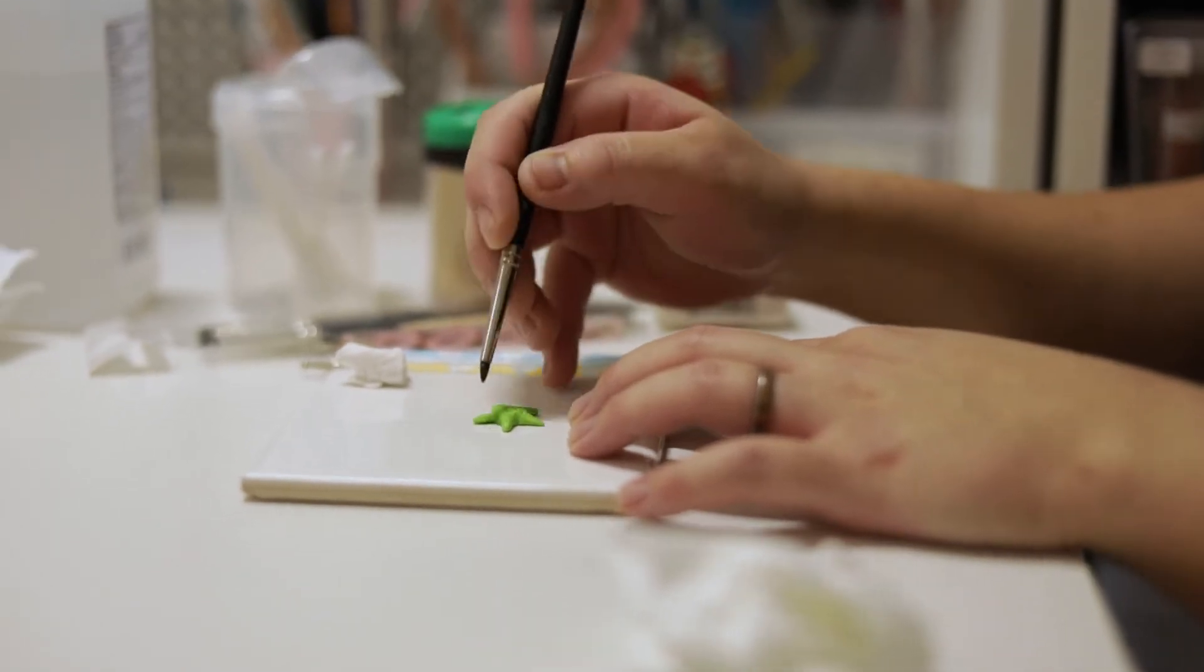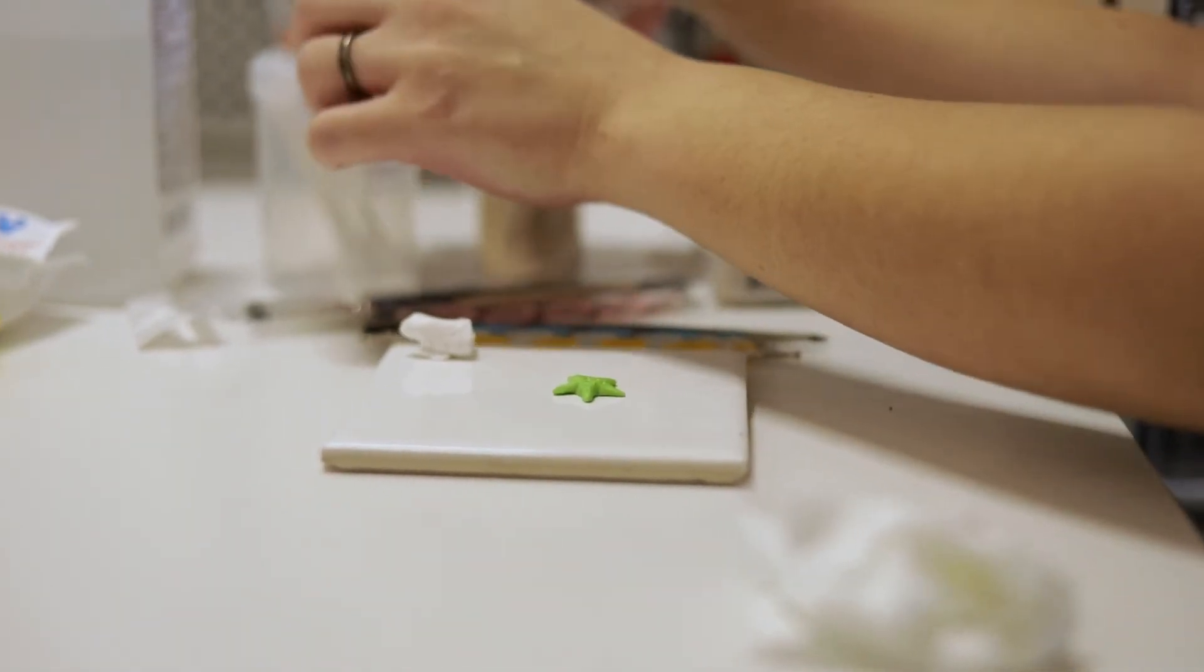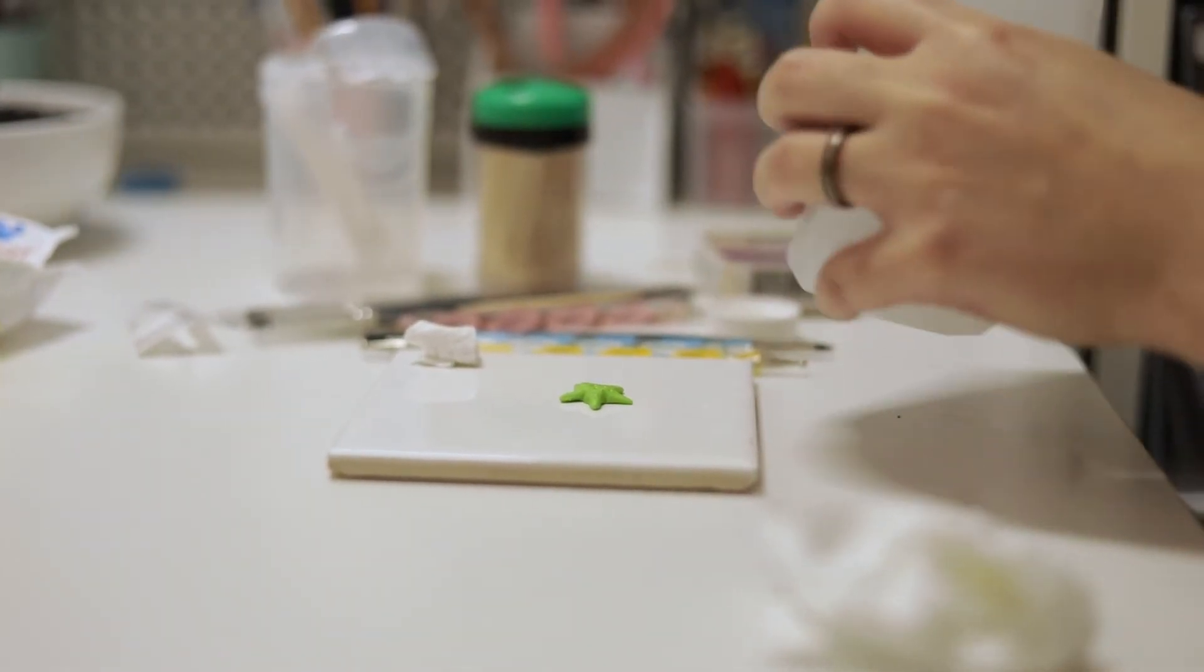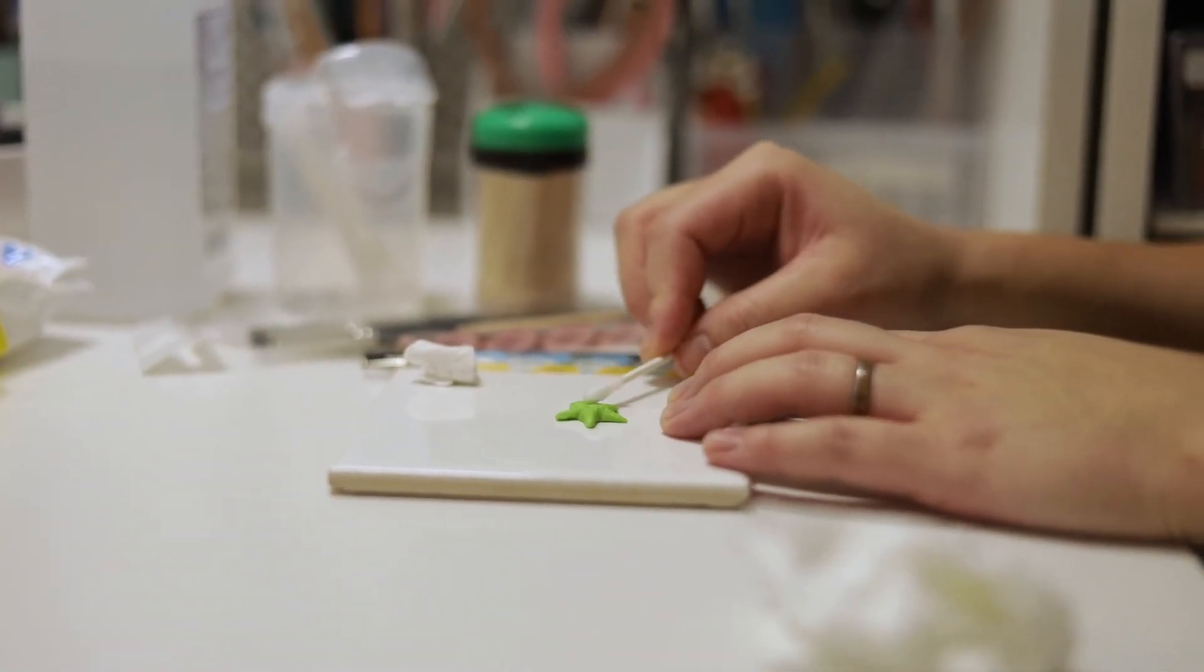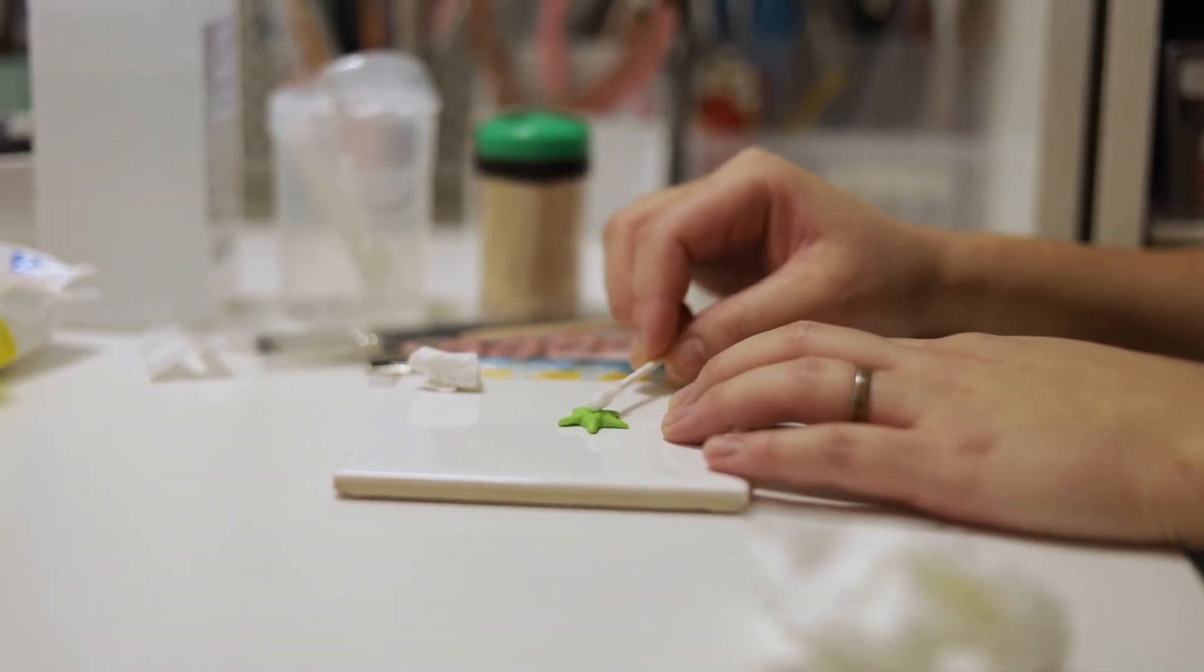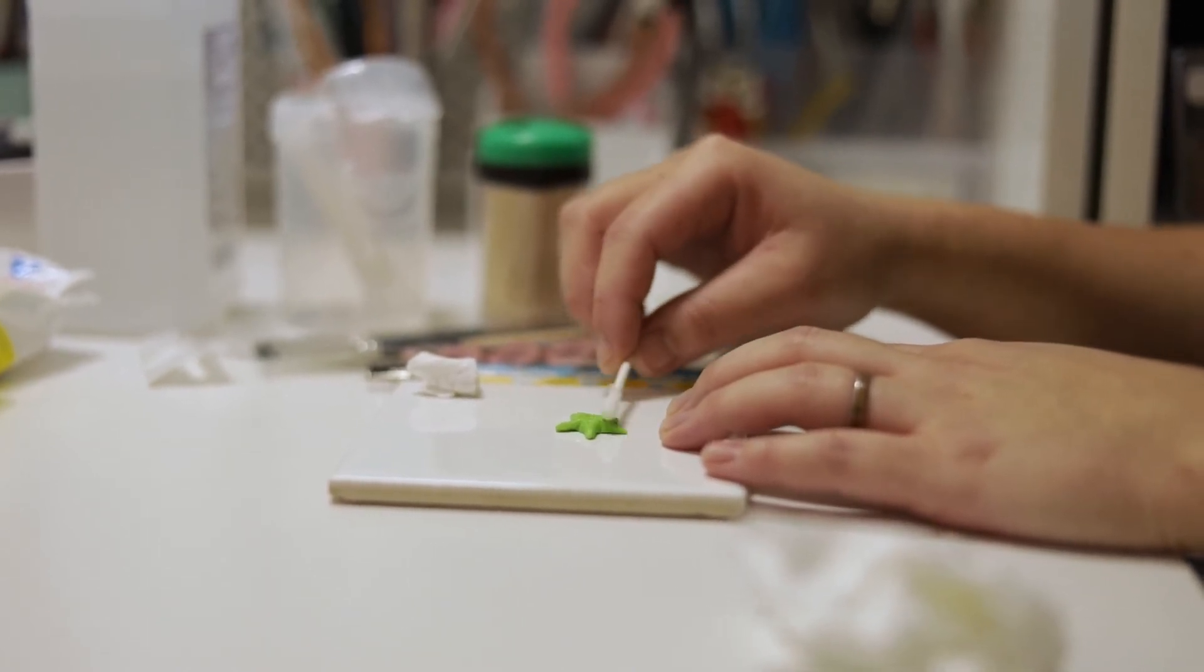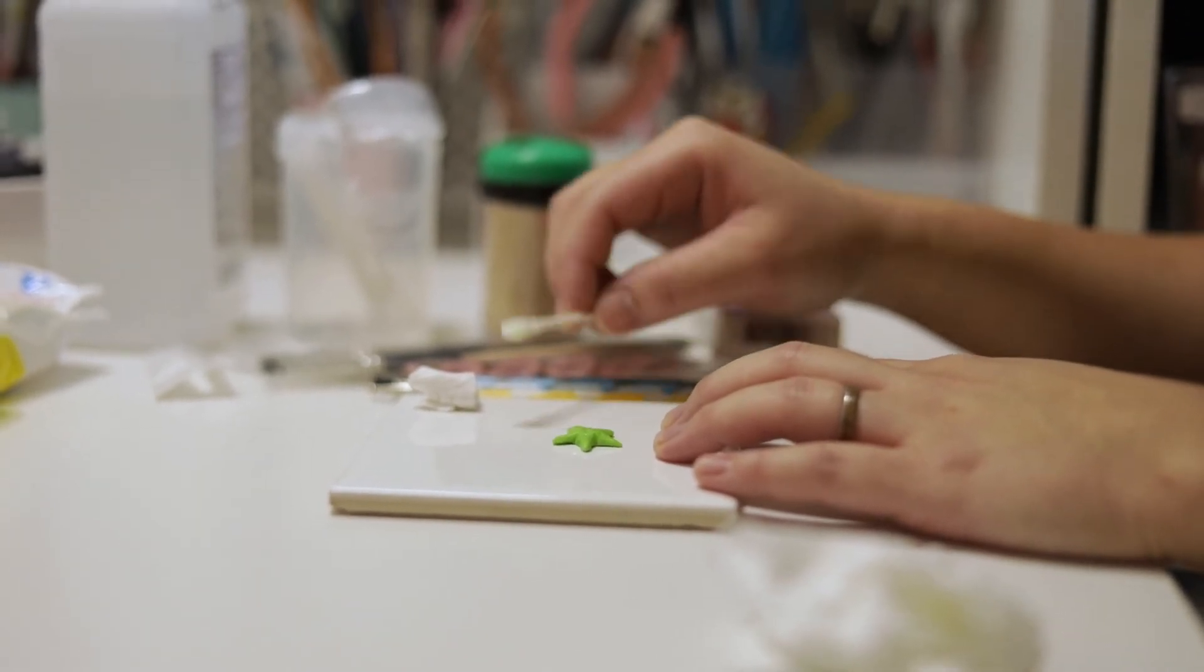Now if there's some fingerprints on there that you don't want to have, then you can use a new Q-tip with rubbing alcohol, just a little bit, just to get rid of the fingerprints. I'm going to go very lightly. You don't want to get rid of all the texture, but just so that it's clean of dust and smudges that you don't want there.